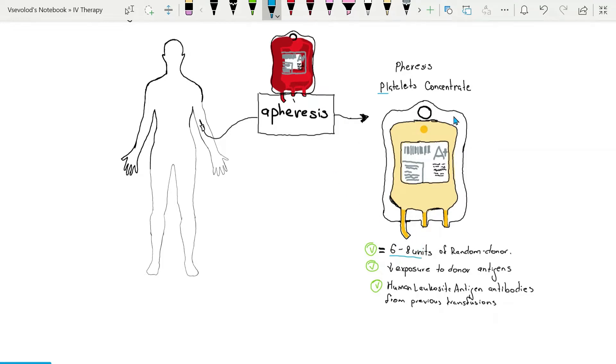Use of a single donor unit has an obvious advantage of exposing the recipient to fewer donors and is ideal for treating patients who have developed human leukocyte antigen antibodies from previous transfusions and have become unresponsive to random donor platelets.